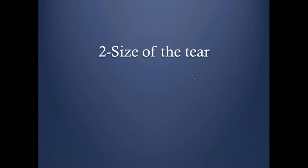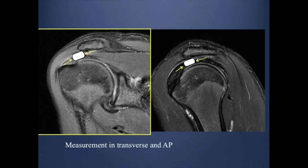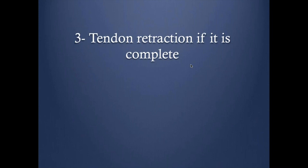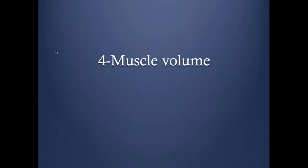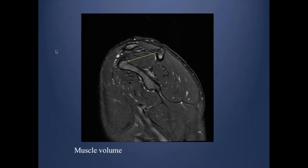Assessment of the tear: when you identify a tear, you must give the size in both coronal and sagittal — the transverse and the anterior-posterior dimension. Check for tendon retraction, particularly if it is a complete tear. Give the degree of retraction from the insertion; there are grading systems for these. Muscle volume is another important predictor. Retraction and muscle volume are very prognostic factors for the outcome of surgery.